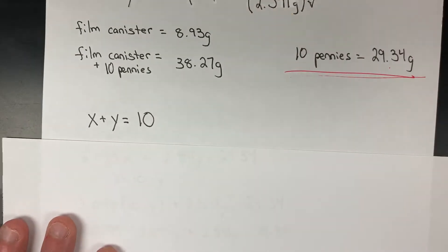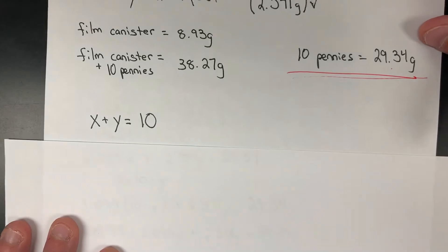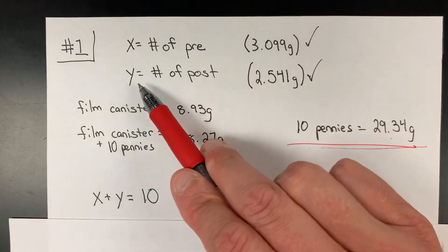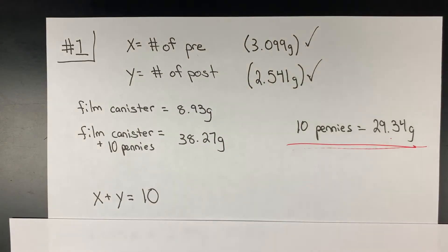As far as your algebraic expression goes, first understand that if we've defined x as the number of pre-pennies and y as the number of post-pennies, and knowing that there are 10 inside, x plus y equals 10.